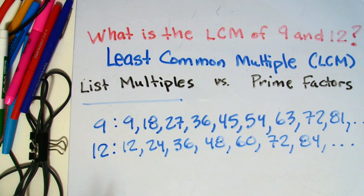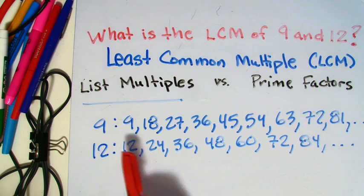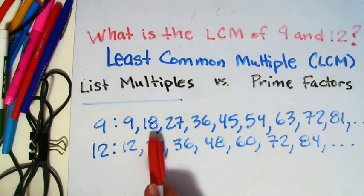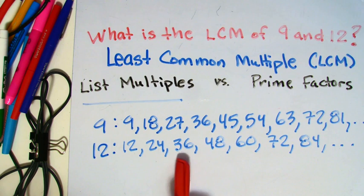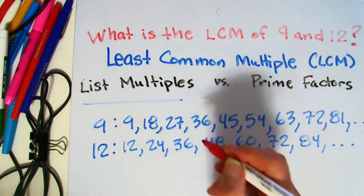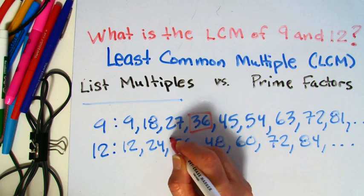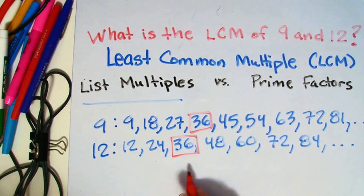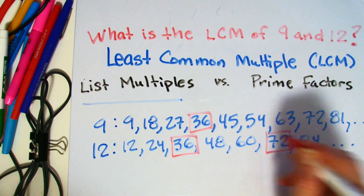So I believe there is one multiple that you can see. Just to double check, I don't see anything. Oh, I do see a 36 and a 36 here. And there is another one, 72 is another one.